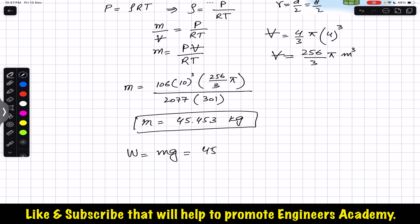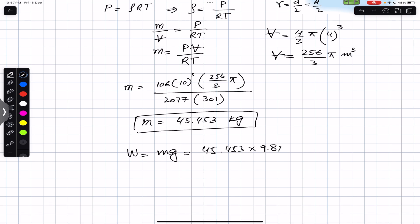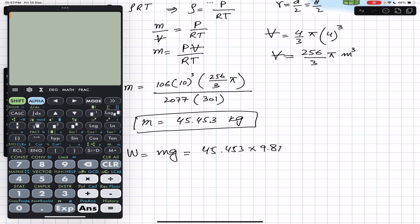So mass is 45.453 multiplied by 9.81. So we have to multiply this answer, we can say 45.453 × 9.81. So this gives us the weight equals to approximately...